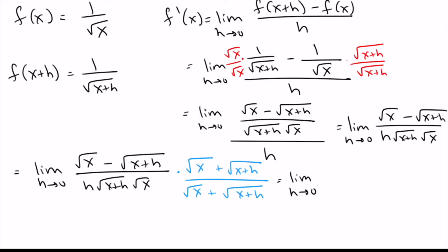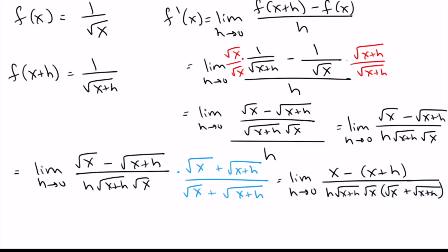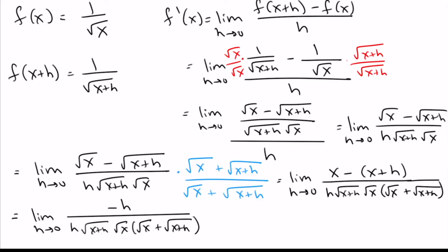Going ahead and doing all the multiplying on top — using difference of squares — we get x minus (x plus h) on top. The bottom we really don't want to multiply out yet, to save work. On top we have a little algebra: distributing the negative sign, we're left with just negative h. On the bottom nothing is changing. We can now see we've got an h on top and an h sitting on the bottom that can cancel each other out.